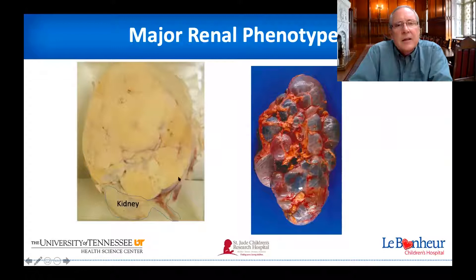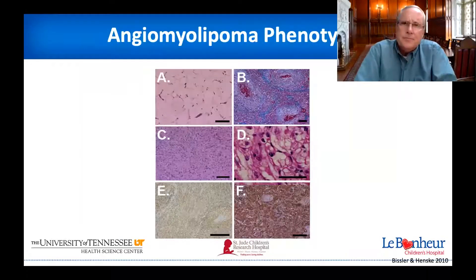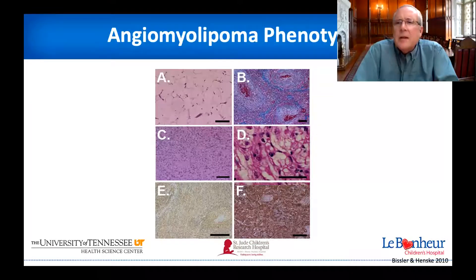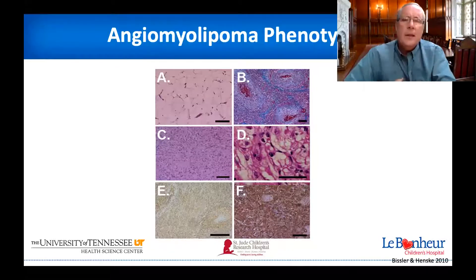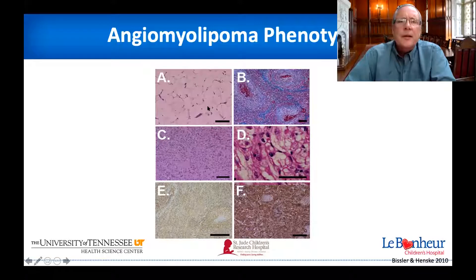Here's an example of an angiomyolipoma — this large lesion next to the kidney — and next to it, a polycystic variety where very large cysts have disrupted the entire kidney. Angiomyolipomas are fascinating because they have many different appearances. Looking at four panels — A, C, and D are hematoxylin and eosin staining; B is Masson's trichrome — these all look vastly different but they're all angiomyolipomas. Panel A looks like mature white fat. B has abnormal blood vessels with smooth muscle walls. Panel C looks like some kind of sarcoma, and D looks like clear cell renal cell carcinoma. However, they're all angiomyolipomas, confirmed by additional testing.